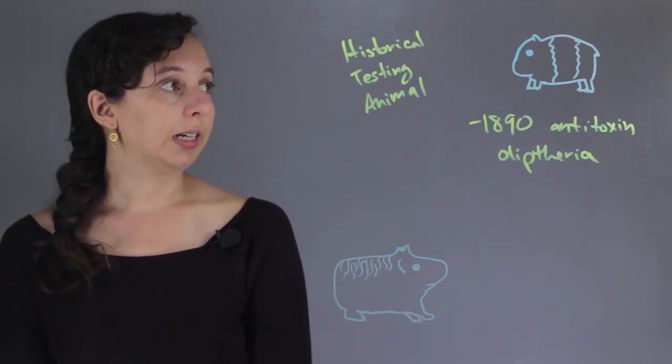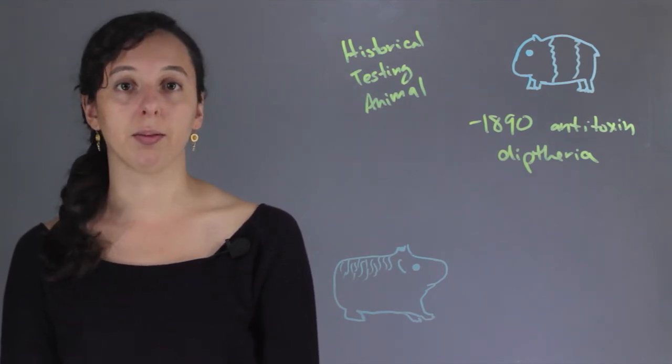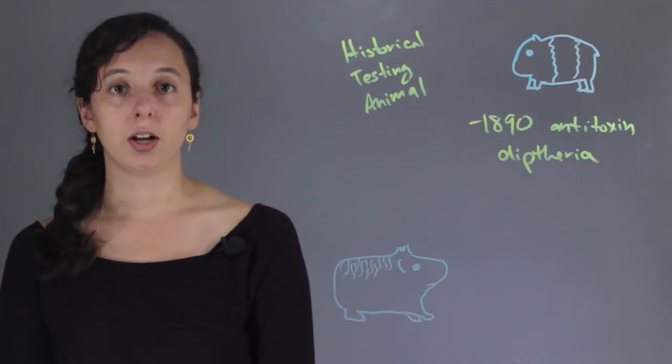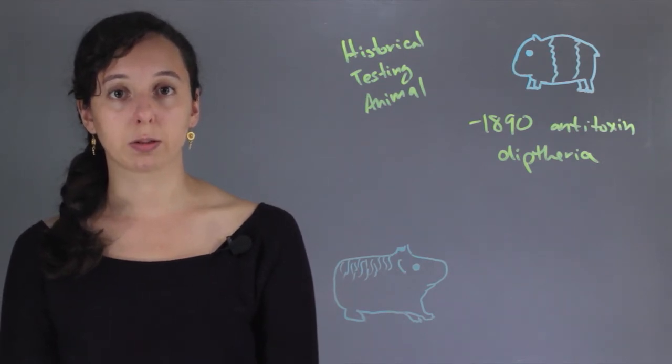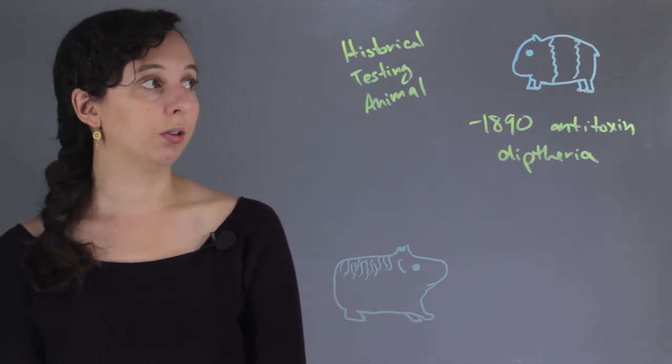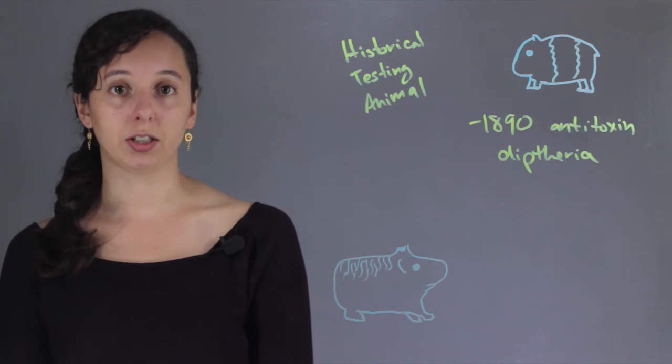Basically, guinea pigs started to lose favor, and rats and mice replaced them. Rats and mice are really cheap. They're genetically very similar to humans, more similar than guinea pigs. And so they started to overcome their unpopularity, but the term guinea pig had already stuck.